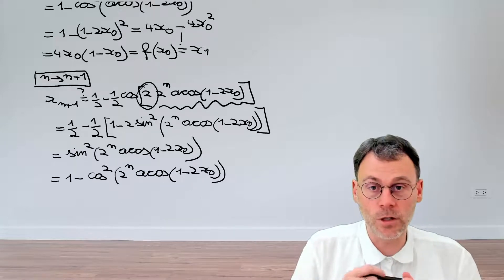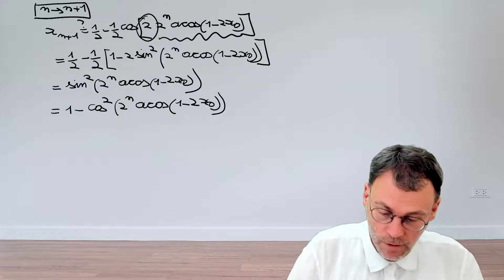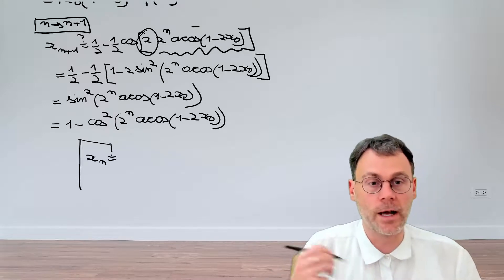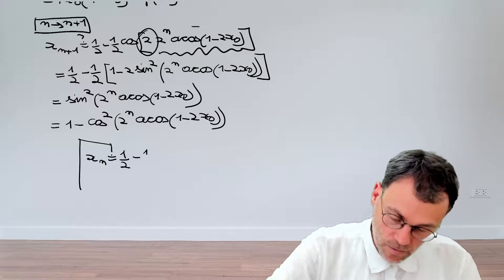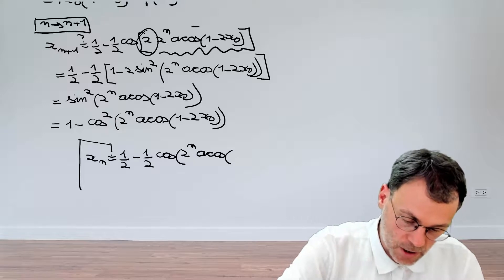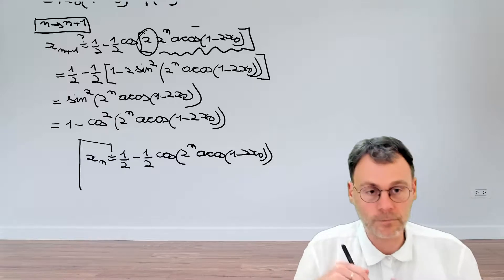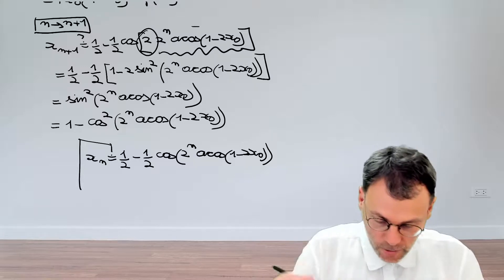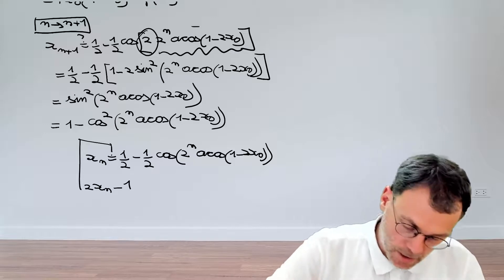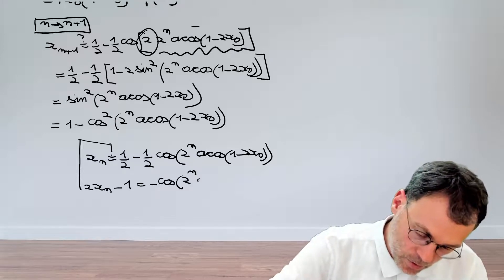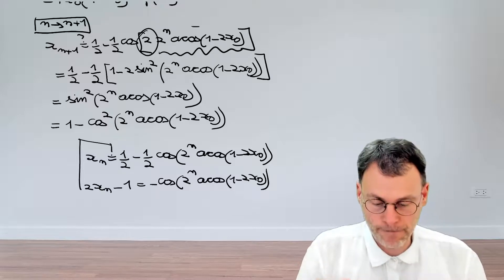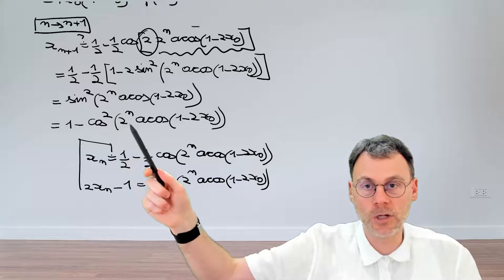This is where we make use of the assumption that the formula holds for n. Opening an auxiliary bracket: we know — or at least assume — that x_n equals one half minus one half cosine of two to the power of n times arc cosine of one minus two x₀. We can massage this to get two x_n minus one equals minus cosine of two to the power n times arc cosine of one minus two x₀.